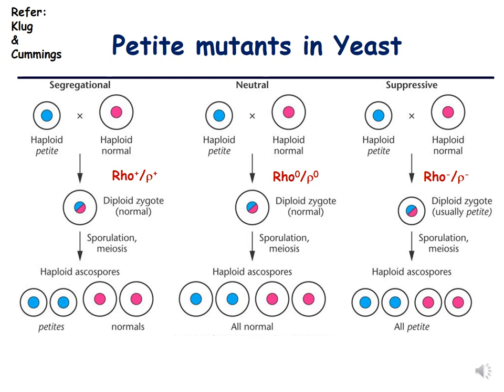In the third type, suppressive petite, the haploid petite hybridizes with the haploid normal. After the diploid zygote is formed and sporulation occurs, all spores formed are of small size — all petite. This can be explained because the rho here is defective, formed by mutated mitochondrial genes. This mutated rho dominates the normal rho, divides very fast, and so all spores formed are of smaller size.